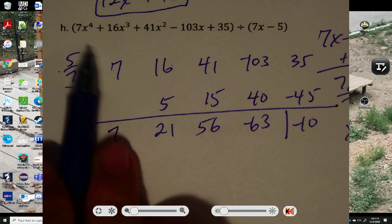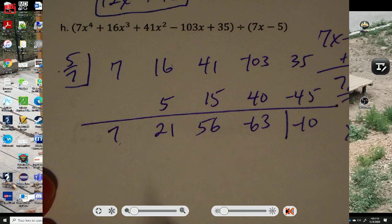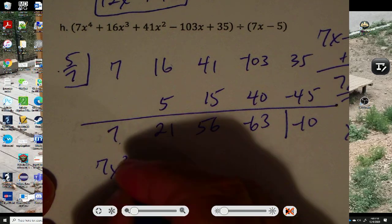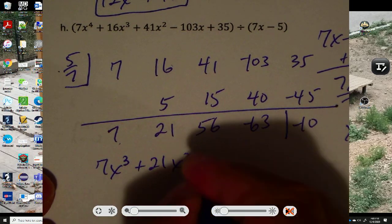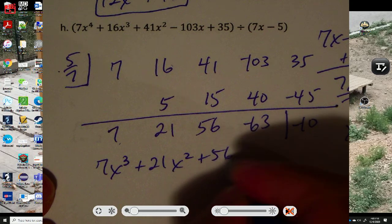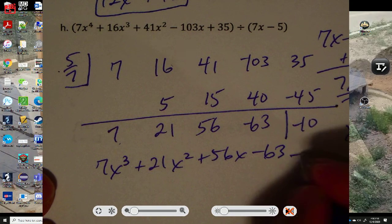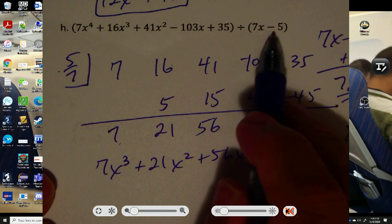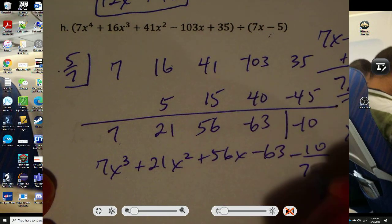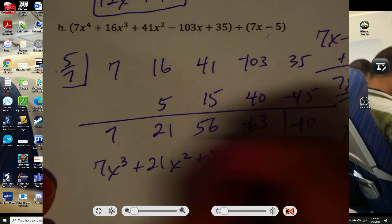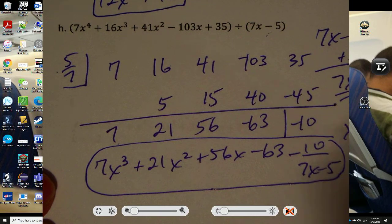This was x to the 4th. So this is now x to the 3rd. So it's 7x to the 3rd plus 21x squared plus 56x minus 63 minus 10 over. Don't forget their divisor. 7x minus 5. 7x minus 5. And that is our answer.